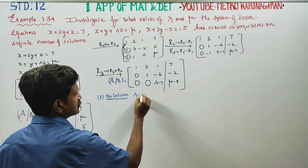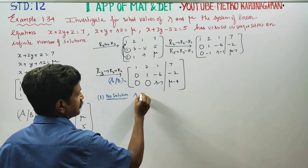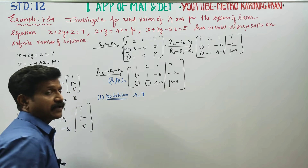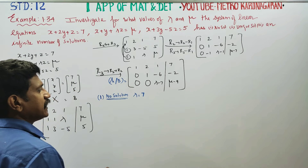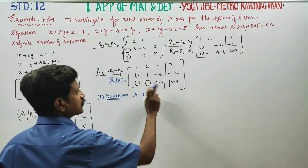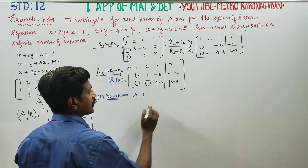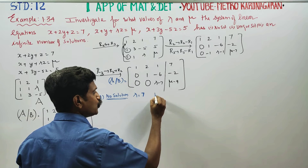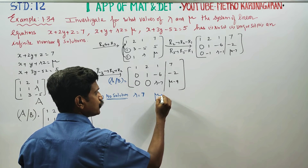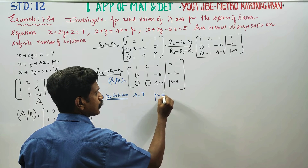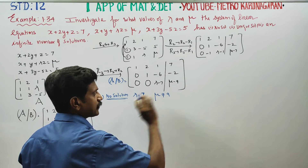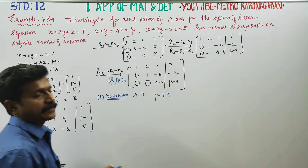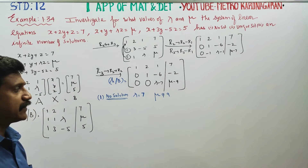From the row reduction, we get lambda is equal to 7. For mu, it is not equal to 9.